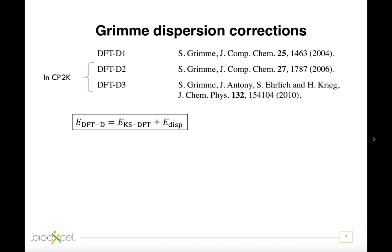In general, in the DFTD schemes, the total energy is calculated as a sum of the usual self-consistent Kohn-Sham energy, as obtained from the chosen density functional, and a dispersion correction, which is, in turn, a sum of two-body and three-body energies.